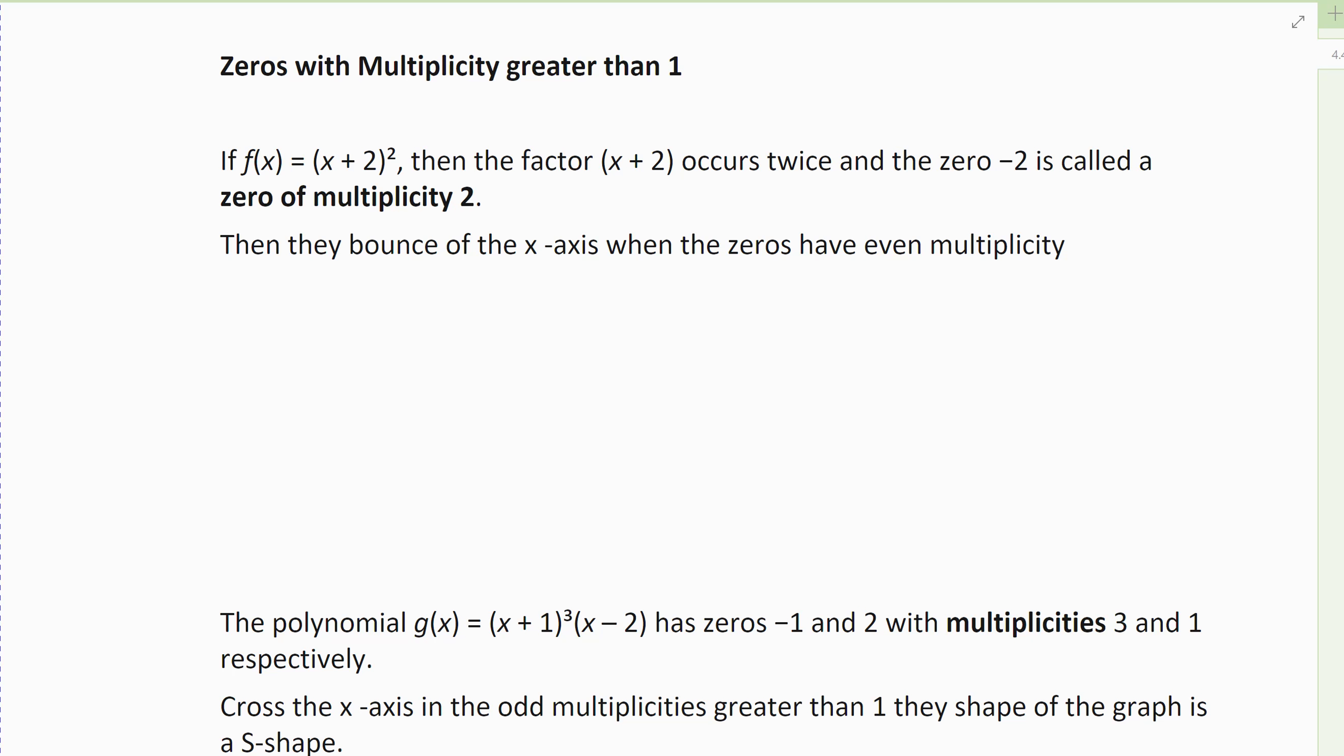So what I mean by that, suppose my function f(x) is the quadratic (x + 2)². That means that function has a zero at negative 2. But it showed up twice, because that's what the square means. It means (x + 2) is multiplied by itself twice. And so that zero at negative 2 has a multiplicity of 2, because technically there were two of them.